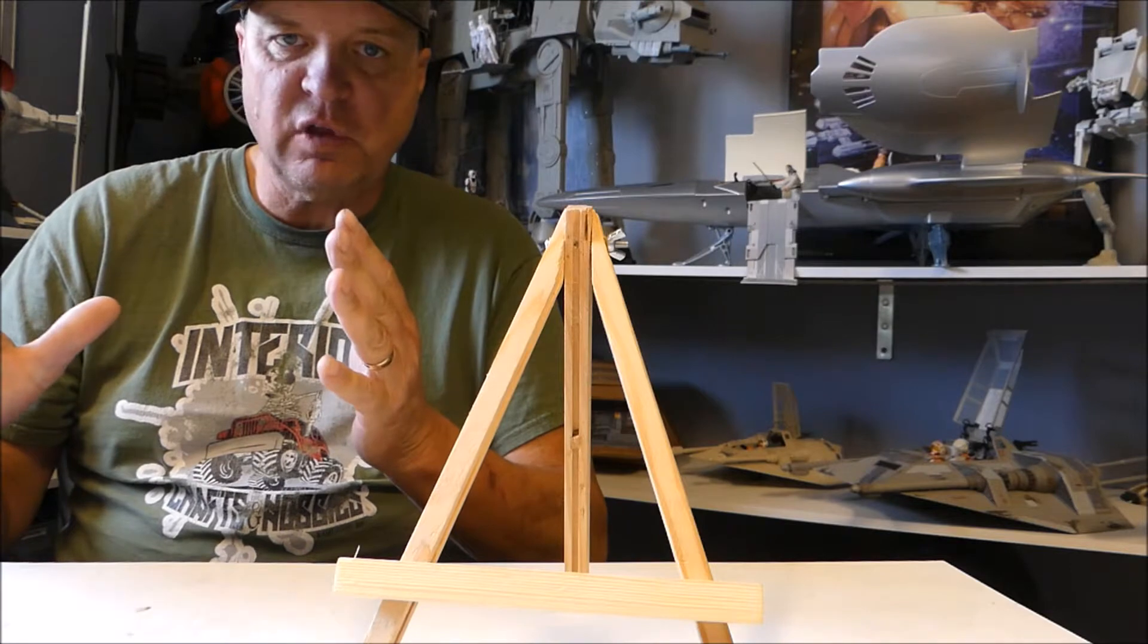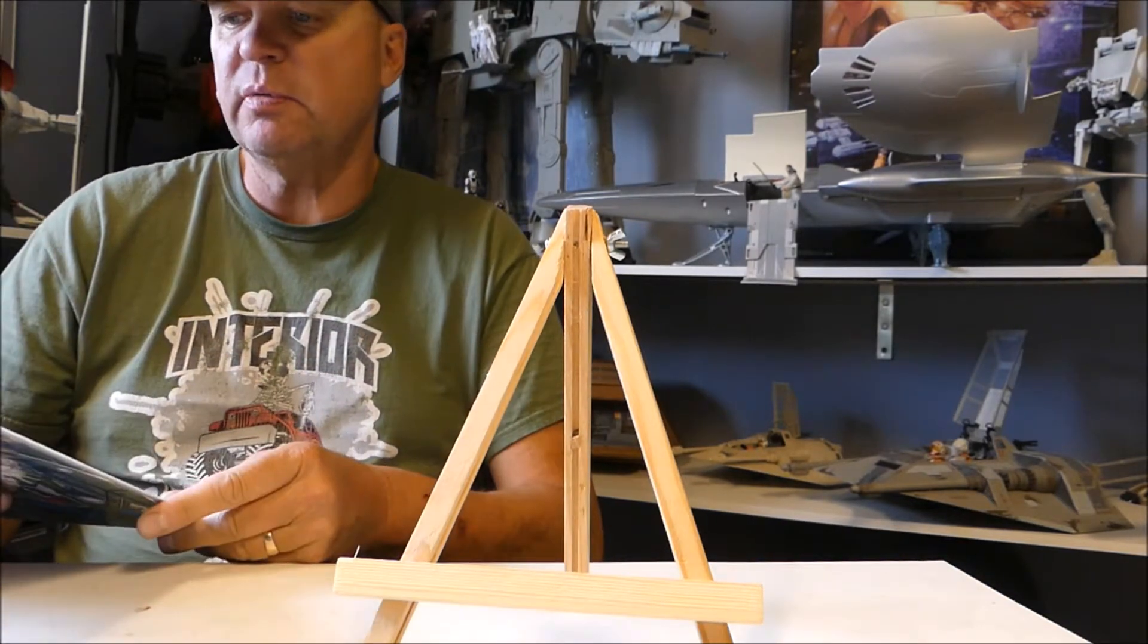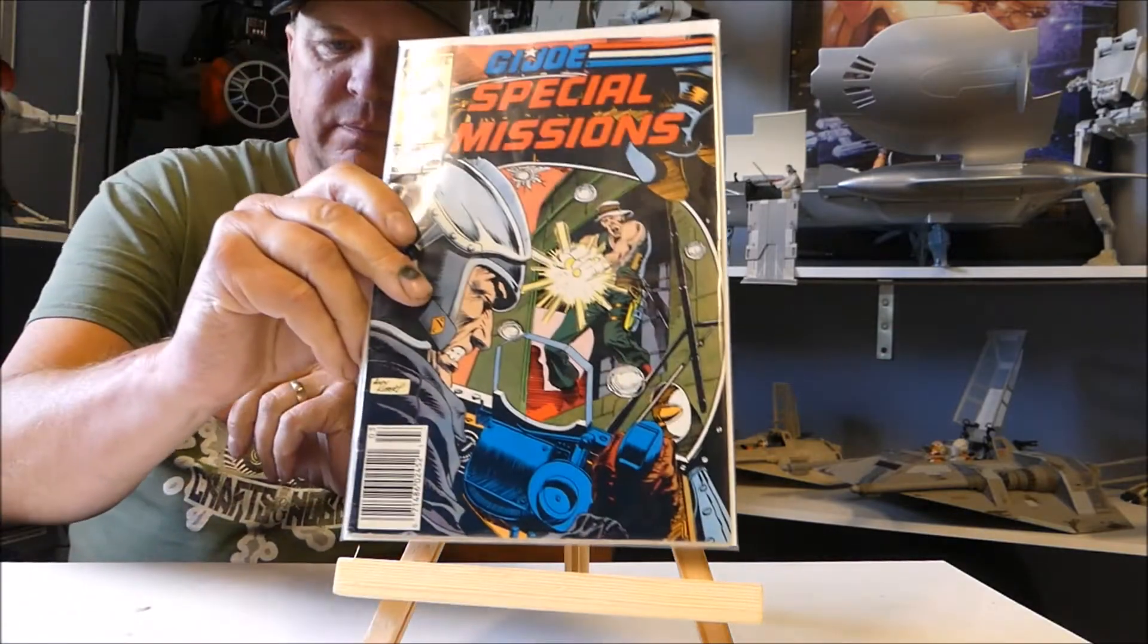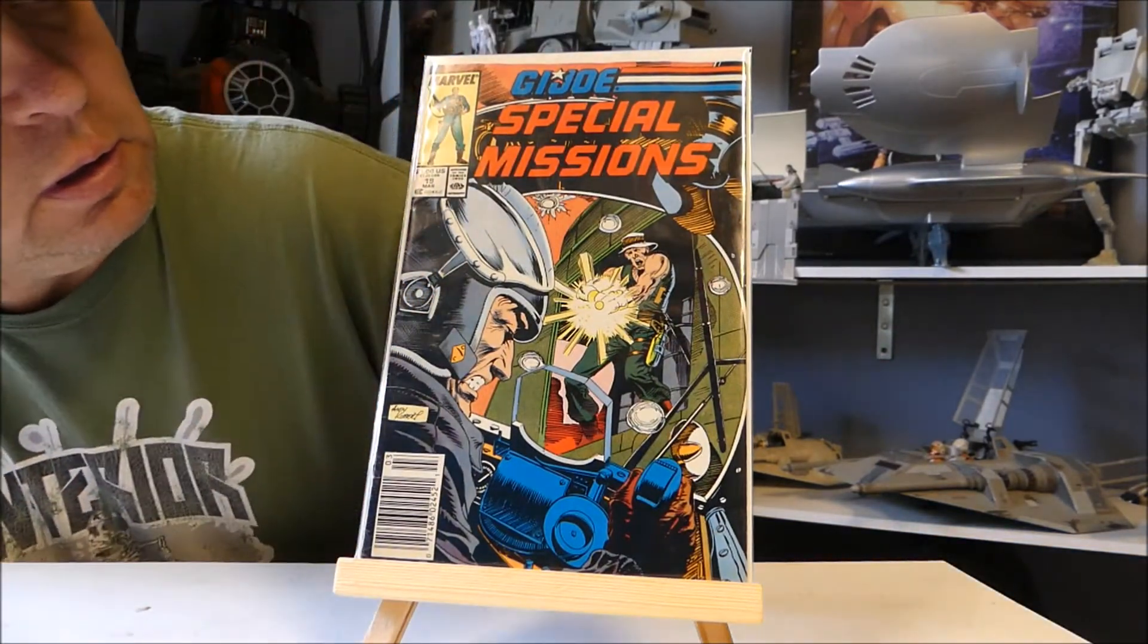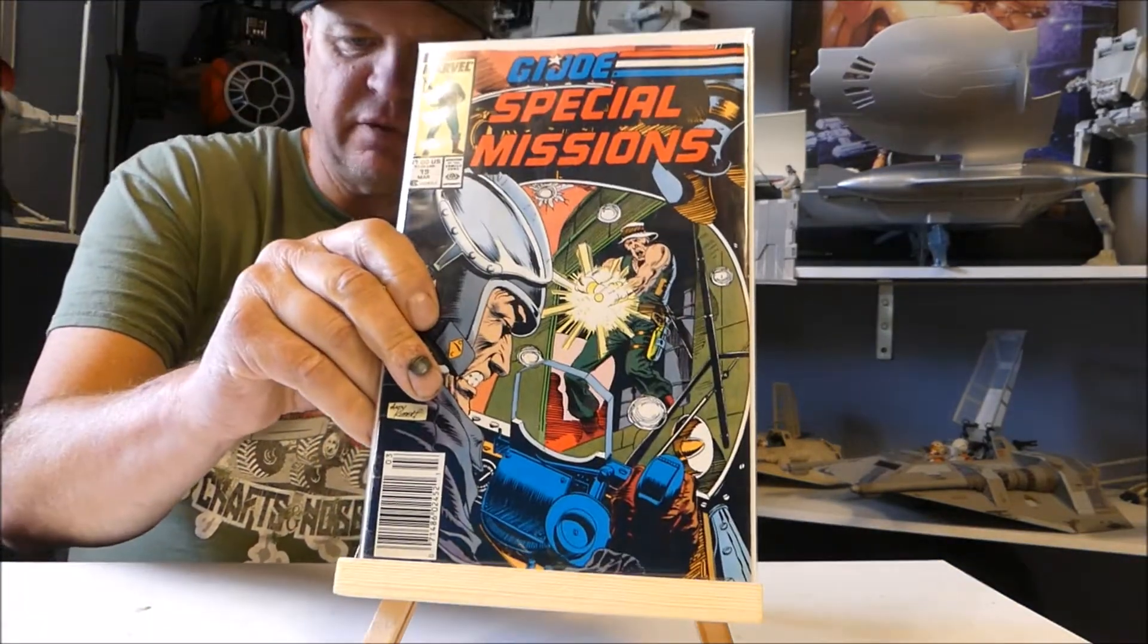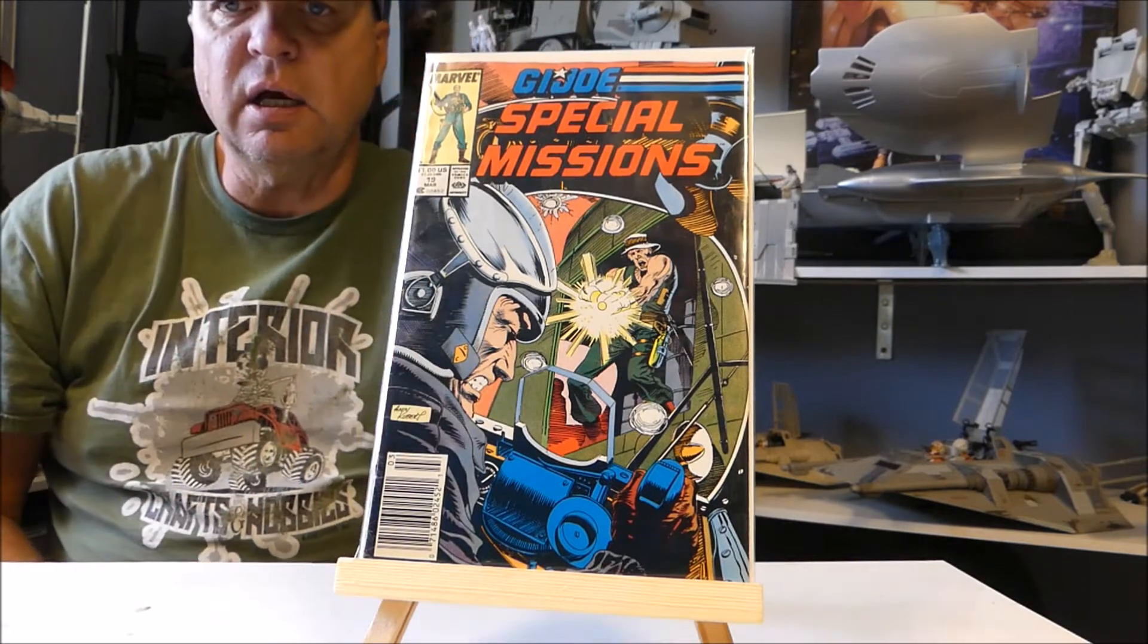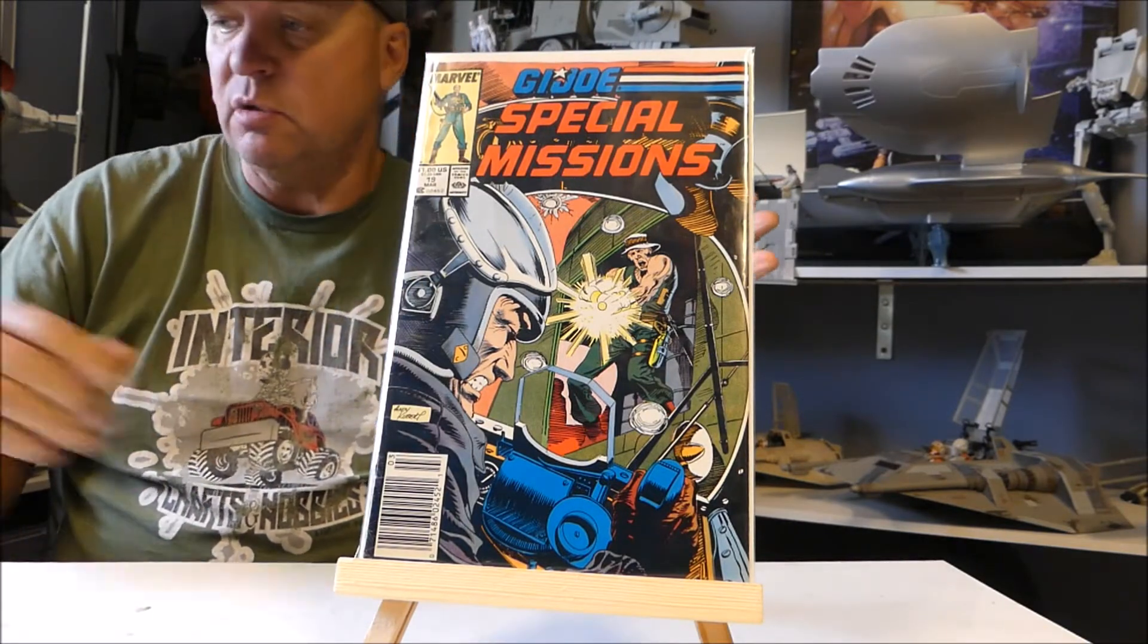Let's start off with two comic books, two floppies that I got at Value Village, a secondhand store. This is from 1989. Andy Kubert is the cover artist and it is GI Joe Special Missions number 19. Absolutely nothing fantastic about this book.